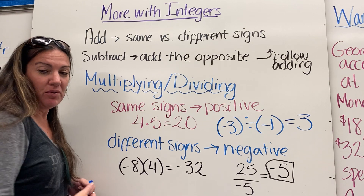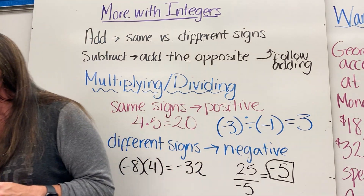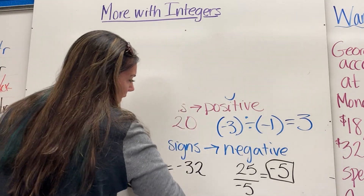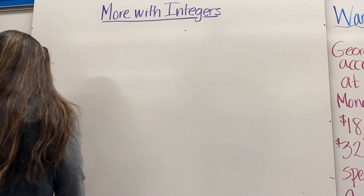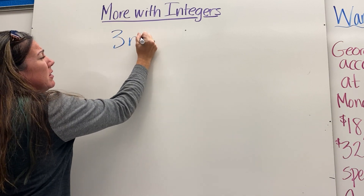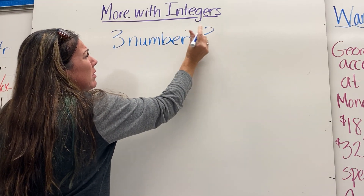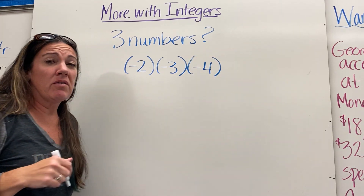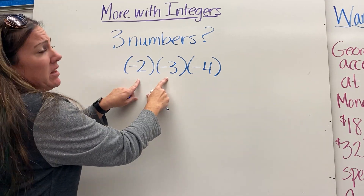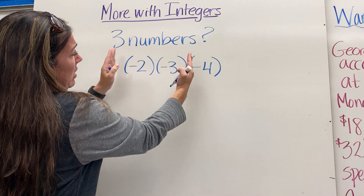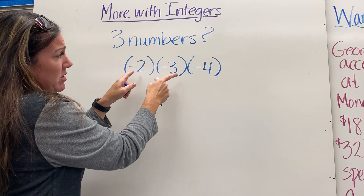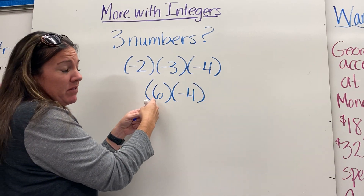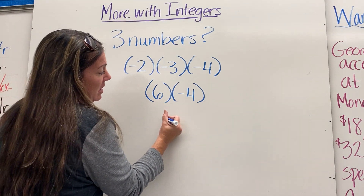What happens if we are multiplying or dividing three numbers? For example, negative 2 times negative 3 times negative 4. Order of operations says we go left to right. First, negative 2 times negative 3 — two negatives — gives us positive 6. Now we have 6 times negative 4: a positive times a negative, so the answer is negative 24.